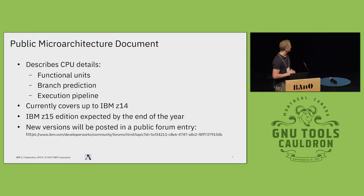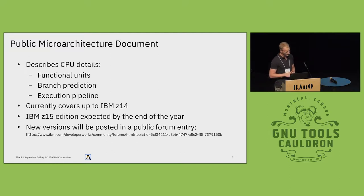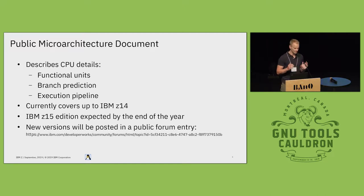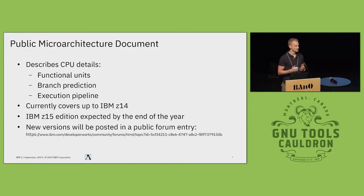One thing I'd like to mention is that since IBM Z13 we also have a publicly available micro-architecture document, written by a distinguished engineer from the hardware side. So far it only covers up to IBM Z14, but he promised to add the Z15 stuff as well. That document describes tons of details about the architecture, functional units, branch prediction, execution pipelines — it's a really interesting read. The author also encourages everybody to ask questions in a forum or give recommendations or ask for additions.